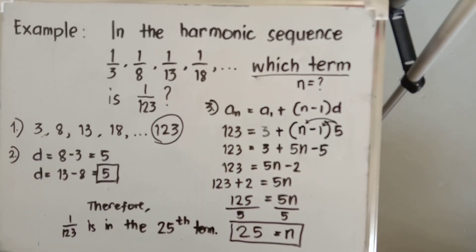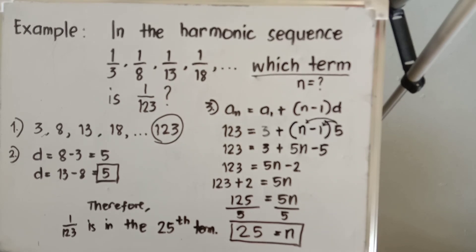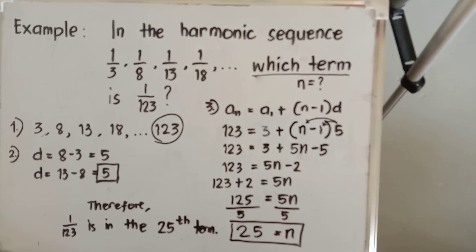There is no need to get the reciprocal form because we are only looking for the term position. You only have to reciprocate your term when looking for a specific term of the given harmonic sequence. And that is all about harmonic sequence. I hope that we've learned something. If you have questions, feel free to ask.